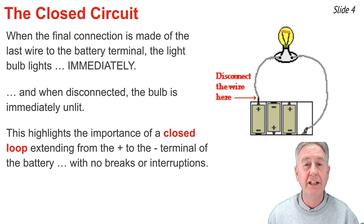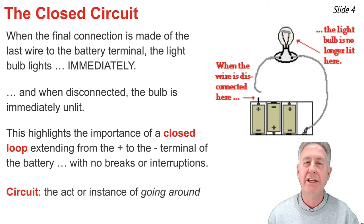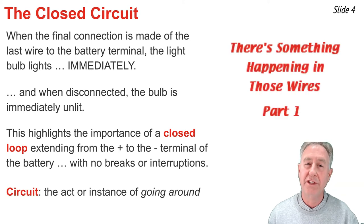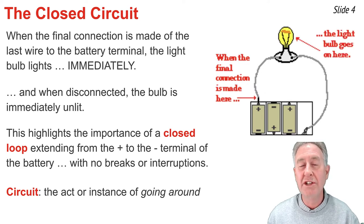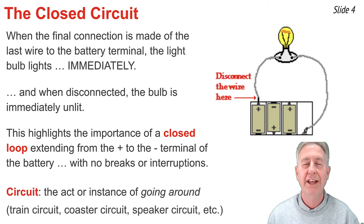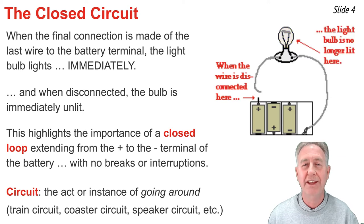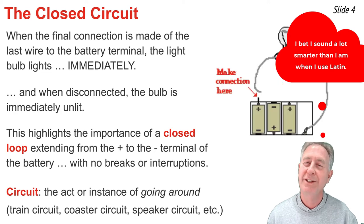When that closed conducting loop is present, we have an electric circuit, as long as there are no breaks or interruptions. An electric circuit is when you have an instance of something going around and around — in this case, it's charge that goes around and around. But circuit is not restricted to the world of physics. We speak of the train circuit, the roller coaster circuit, and even the speaker circuit. In all such cases, there's something going around and around. The word circuit comes from the Latin word circum, which means to go around.